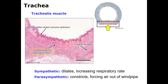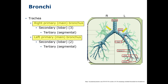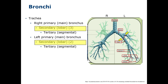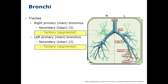Now let's move further down the conducting zone into the bronchi. At the carina, the trachea branches into the right and left primary bronchi, which enter the hilum of each lung, where the pulmonary artery, vein, nerves, and lymphatics also enter. Secondary divisions of each bronchi divide the lungs into lobes. Subsequent bronchial divisions further subdivide the lung into bronchopulmonary segments, each covering approximately 10–12% of each lung.